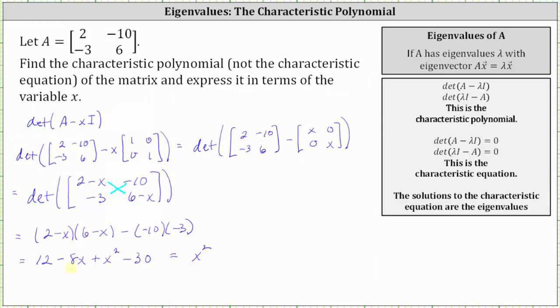We have x squared minus 8x. And then 12 minus 30 is equal to negative 18, giving us minus 18.